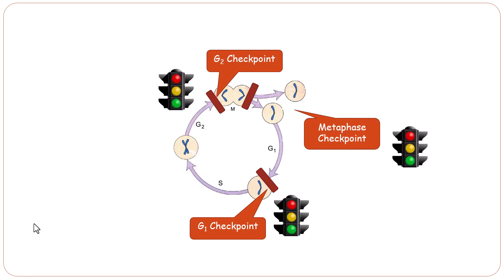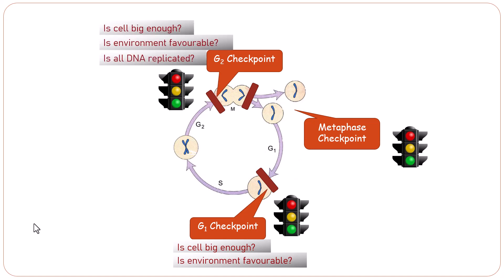These checkpoints allow cells to monitor how they are progressing through different phases. For example, the G1 checkpoint will make sure that the cell is big enough, there are enough nutrients available, and the environment is favorable for the process to go ahead. At the G2 checkpoint, again, is the cell big enough, is there enough nutrition, is the environment favorable, plus is all DNA replicated and replicated without any error. At the metaphase checkpoint, the cell will check whether all chromosomes are aligned on the spindle before they separate and go into two daughter cells.